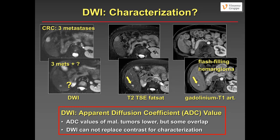DWI is less useful for characterization. Sometimes it helps with hemangiomas, but there is overlap: a small lesion can appear almost as bright as a metastasis on DWI. You need T2 — where a hemangioma is much brighter than a moderately bright metastasis — and contrast enhancement, showing rim enhancement for the metastasis versus flash-filling with pooling for the hemangioma. There is overlap in ADC values between benign and malignant lesions, so DWI cannot replace contrast for lesion characterization.